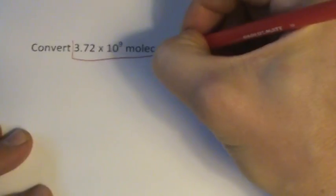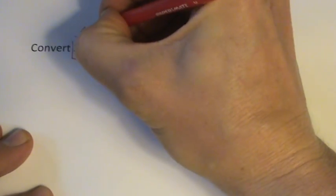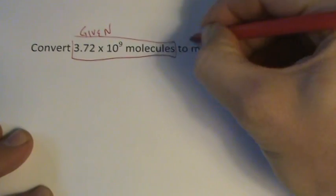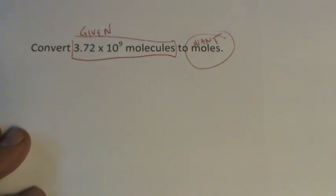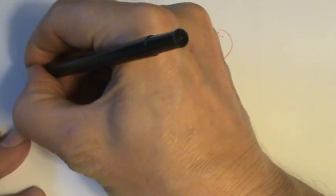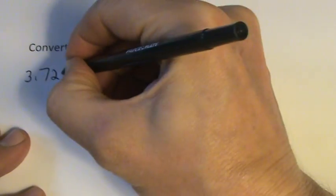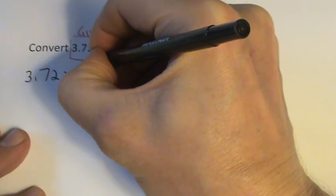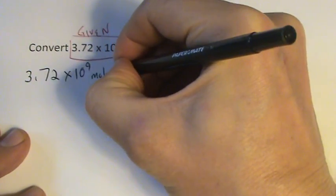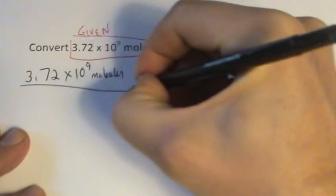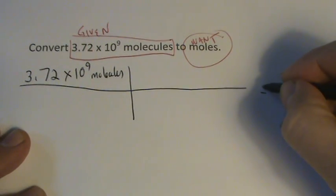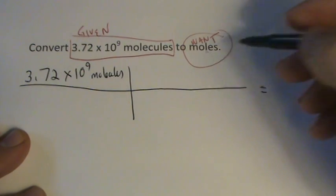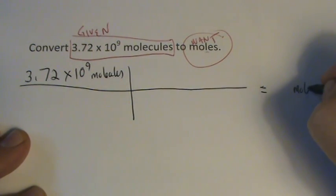We're given the molecules and we want to get the moles. It's set up just like any other problem. We'll start out with 3.72 times 10 to the ninth molecules, and we want to end up with the final answer of moles.